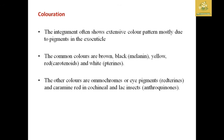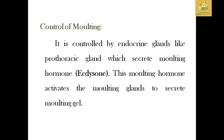Coloration is important. The new cuticles are formed with yellow and red colors from carotenoids, white pigments, and pterines. These three are common pigments. Eye pigments include retinines, carmine red, cochineal, lac insects, and anthraquinones. These pigments are exocuticular and are important to the insect body.